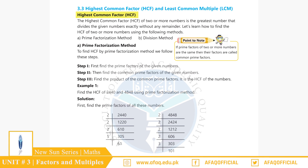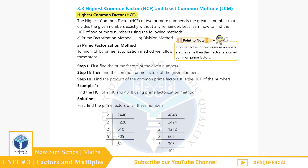Highest Common Factor (HCF): بچوں، HCF دو یا زیادہ numbers کا وہ greatest number ہوتا ہے جو ان numbers کو بغیر کسی remainder کے برابر تقسیم کرتا ہے۔